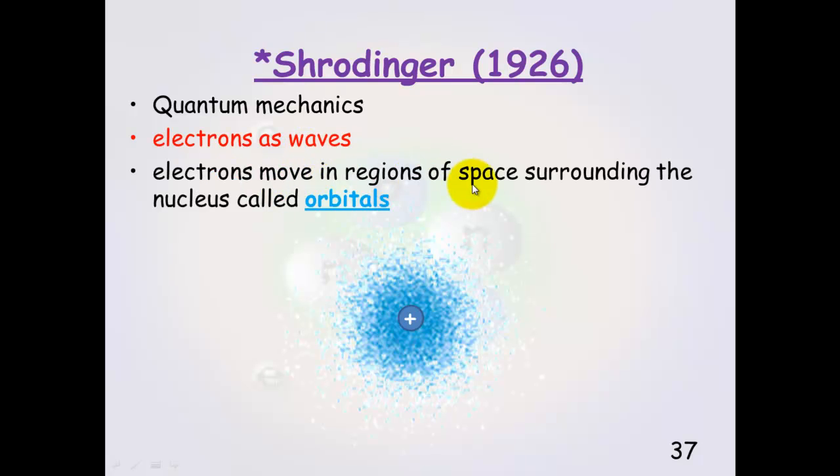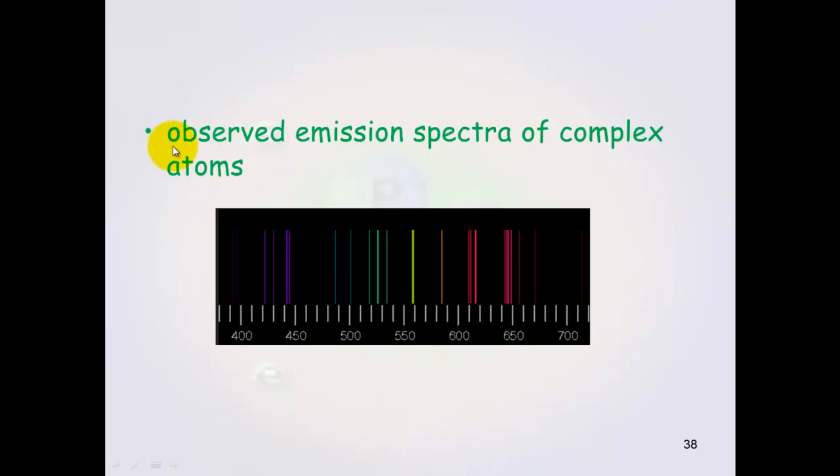Electrons move in regions of space surrounding the nucleus and he called these orbitals. So you can see here, this is a picture of Schrödinger's model. Basically the electron is zipping around, zipping around, zipping around. And it's in certain regions of space. And he called these orbitals. He discovered this by observing the emission spectrum of more complex atoms. So Bohr just looked at hydrogen. Schrödinger looked at lots and lots and lots of different atoms. And he came up with this model.